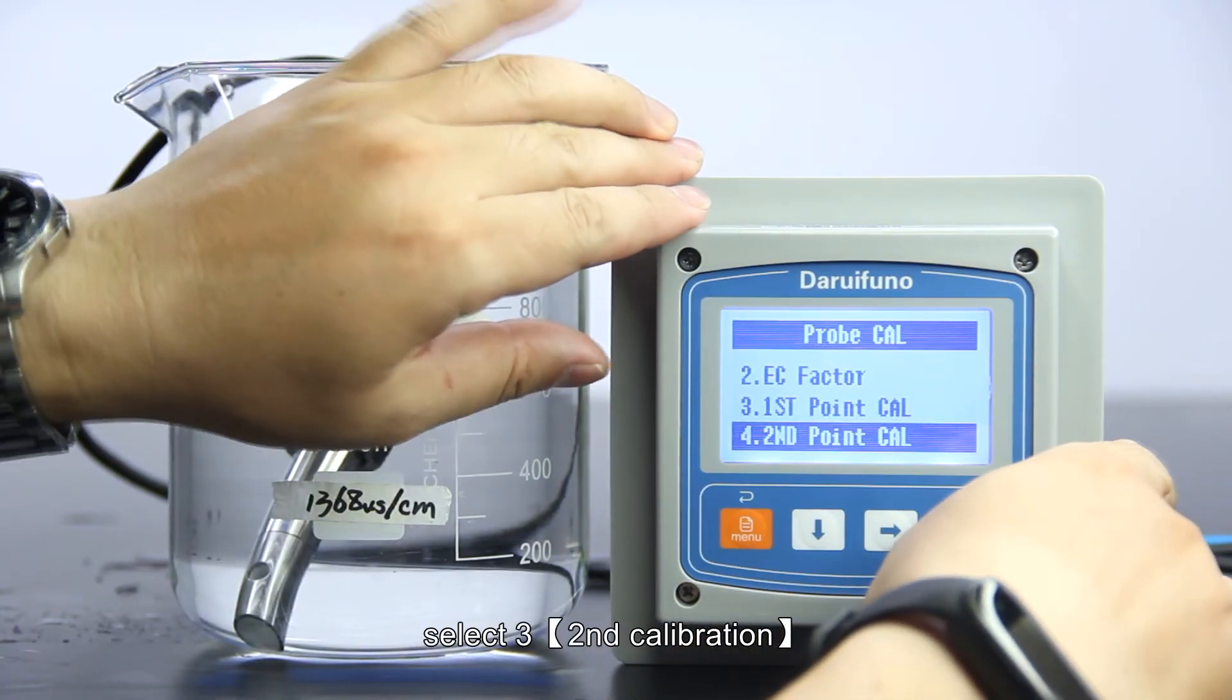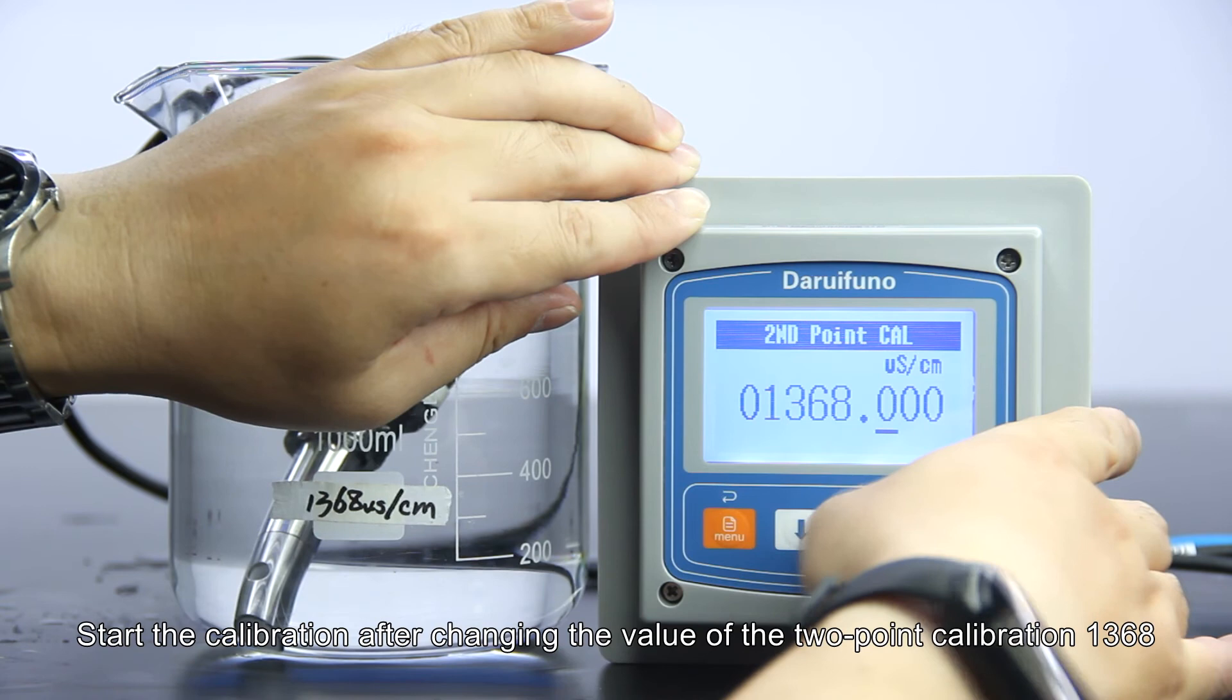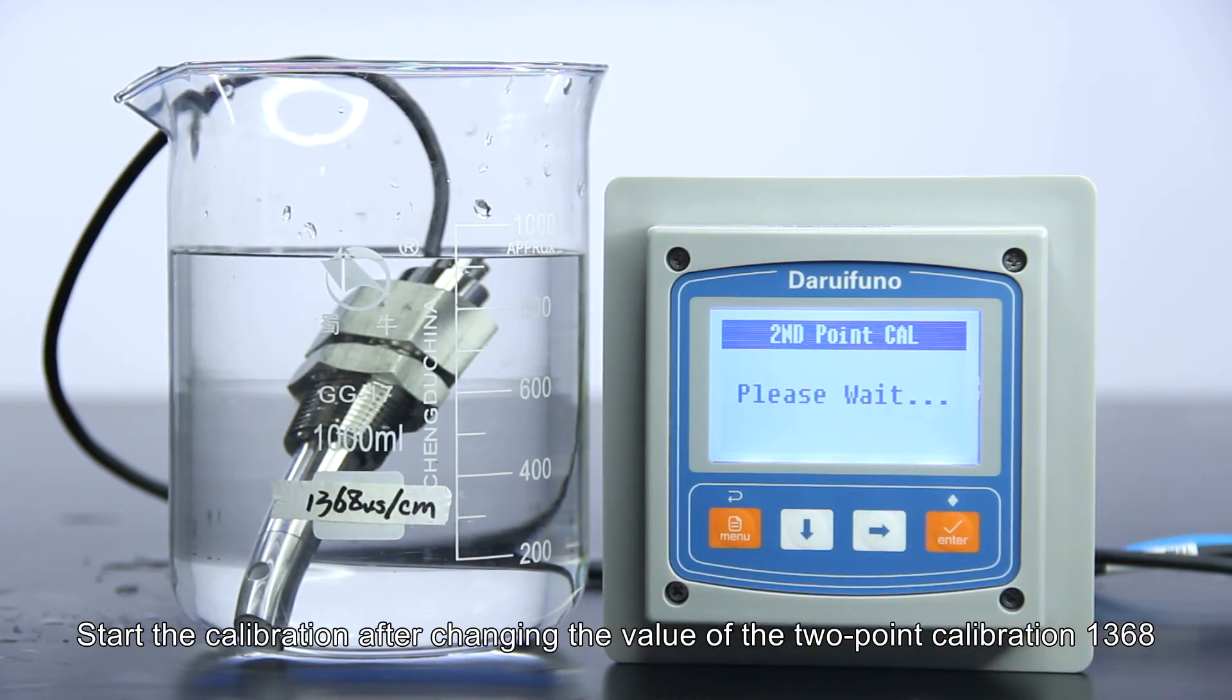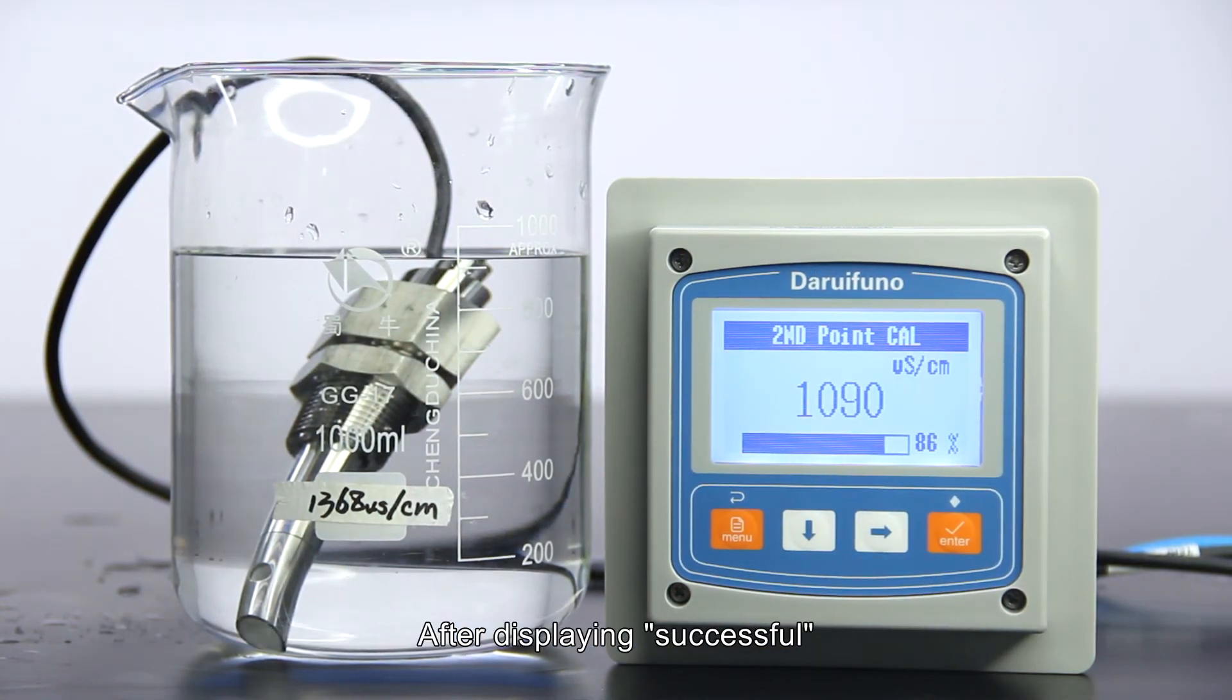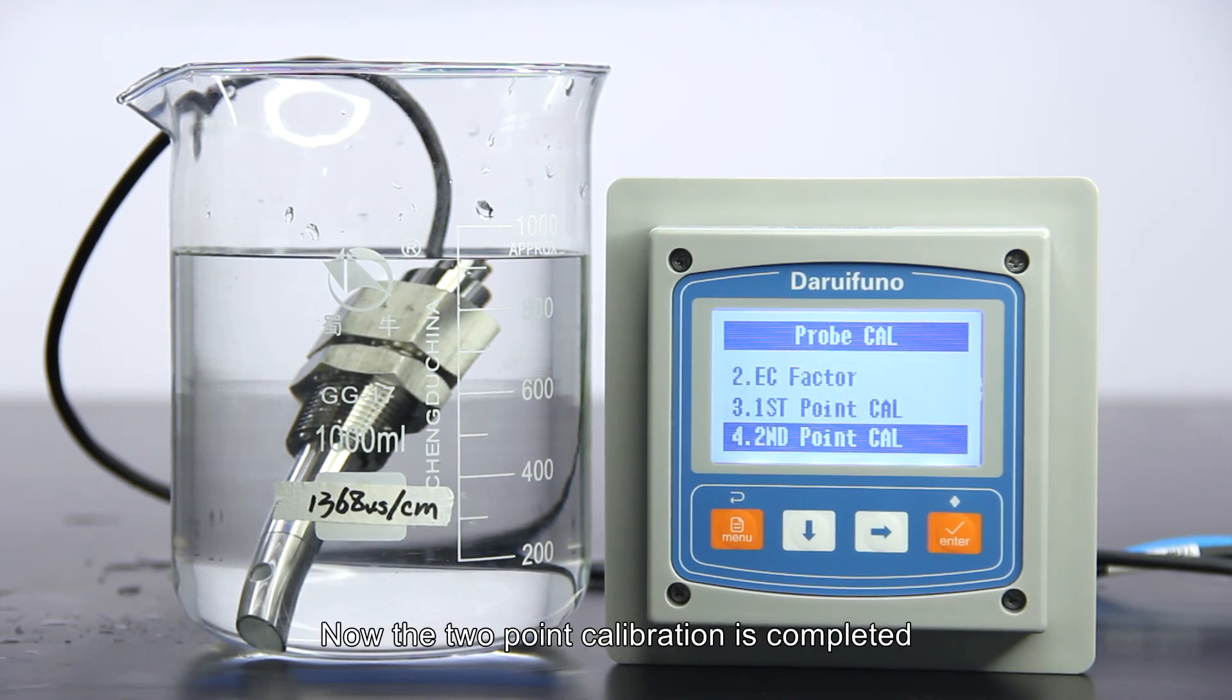Select second calibration. Start the calibration after changing the value of the 2 point calibration to 1368. After displaying successful, return to the main interface. Now the 2 point calibration is completed.